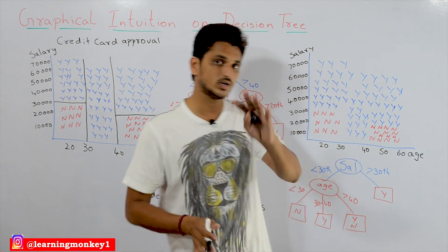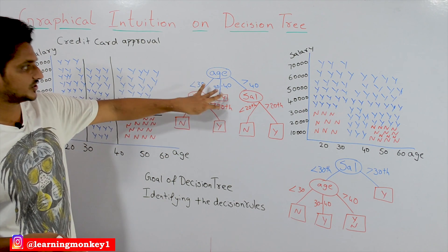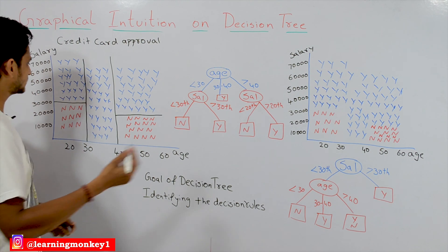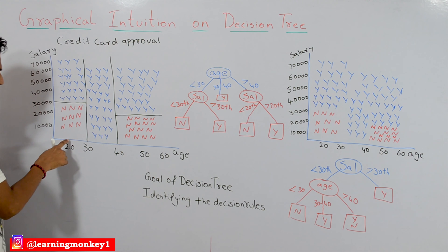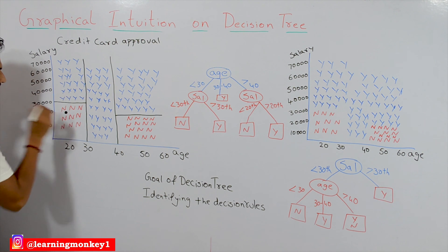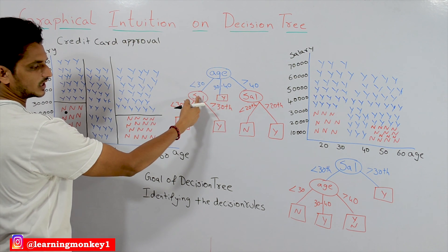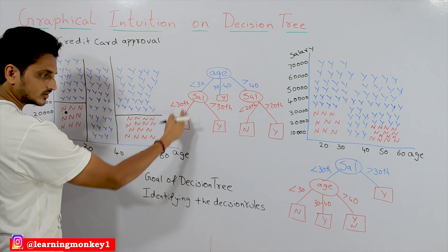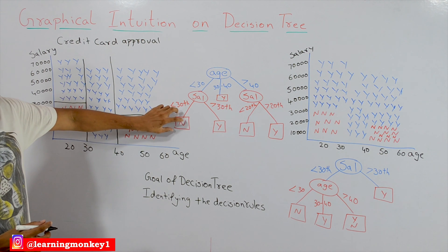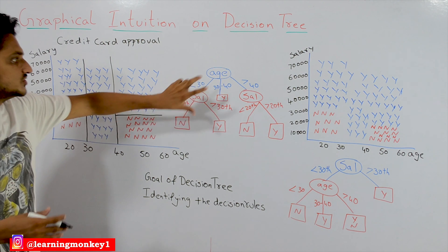Once we identify these decision rules, how do we do prediction on new data? Suppose a new customer comes in with age 20 and a salary of 20,000. Our testing data point comes in: age is 20 so we go to the age less than 30 branch, and salary less than 30,000 so we go to that side — the prediction is 'N', meaning the credit card is not approved. That is how we use decision rules for prediction.